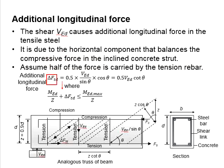The additional longitudinal force to be resisted by the steel bar will be equal to half multiplied by the force, multiplied by cos theta.